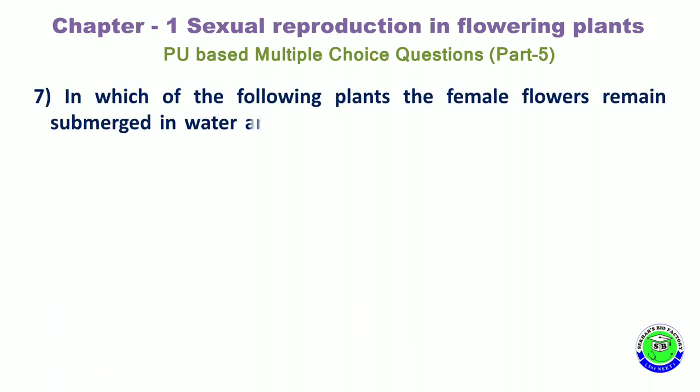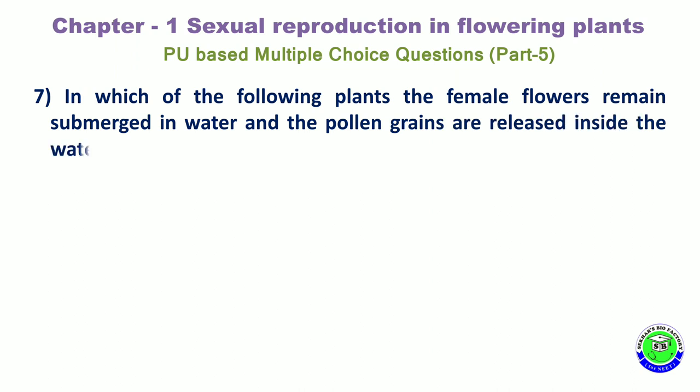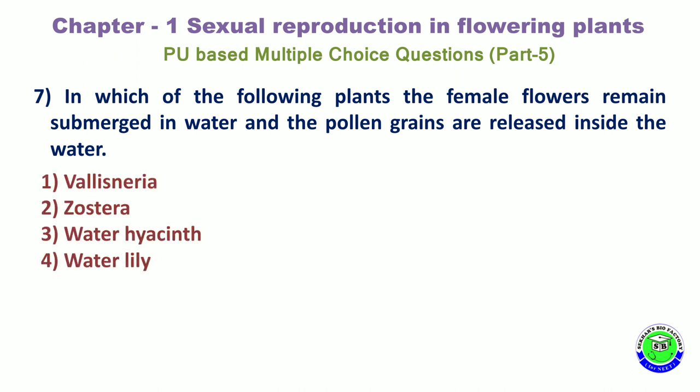Question 7. In which of the following plants do the female flowers remain submerged in water and pollen grains are released inside the water? Option 1: Vallisneria. Option 2: Zostera. Option 3: Water hyacinth. Option 4: Water lily. The correct answer is the 2nd option.